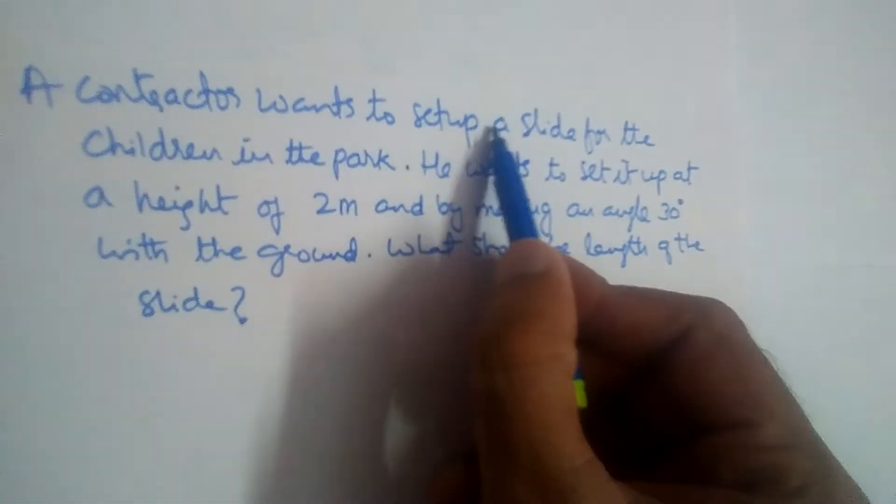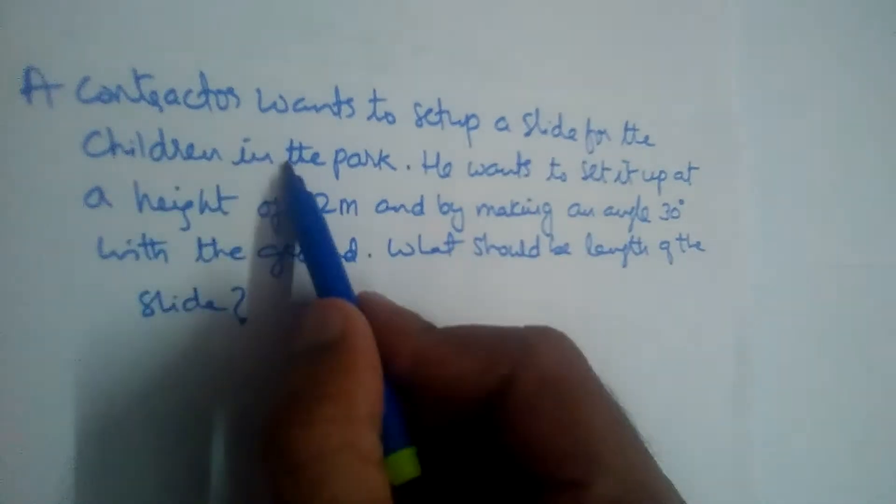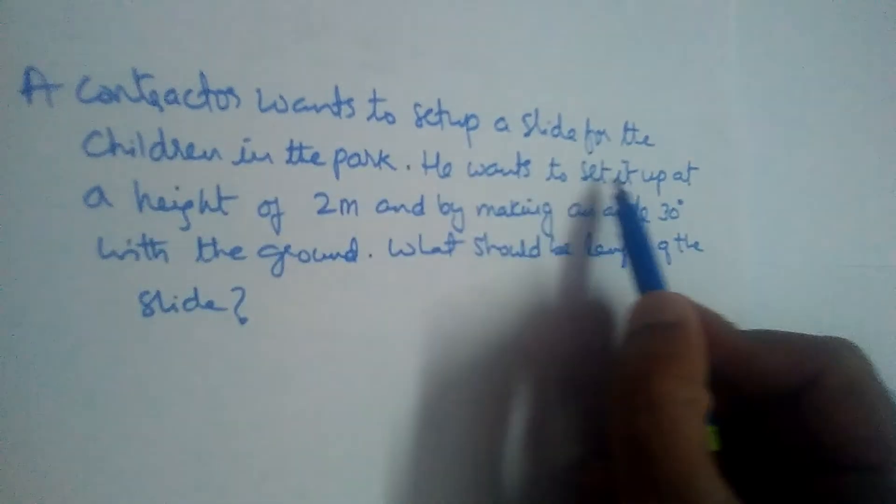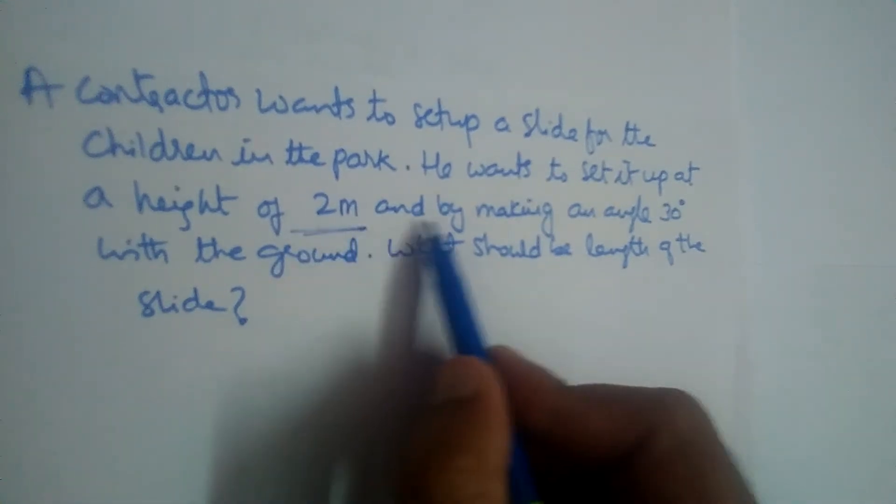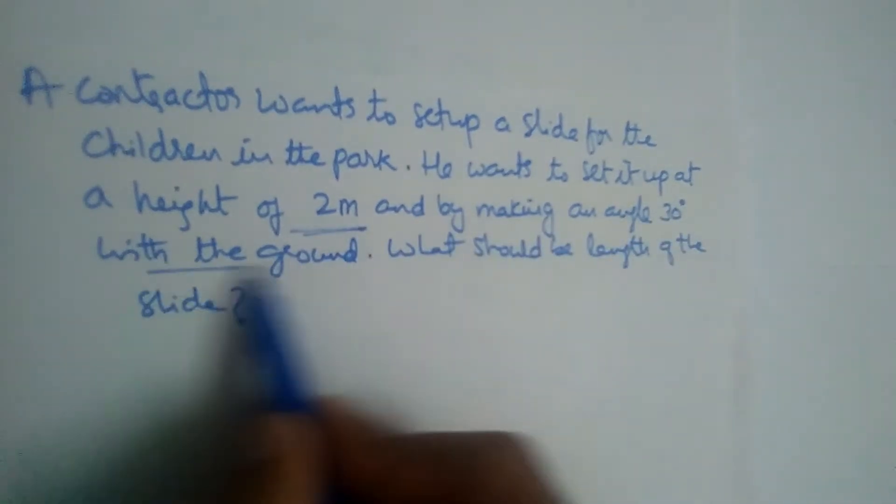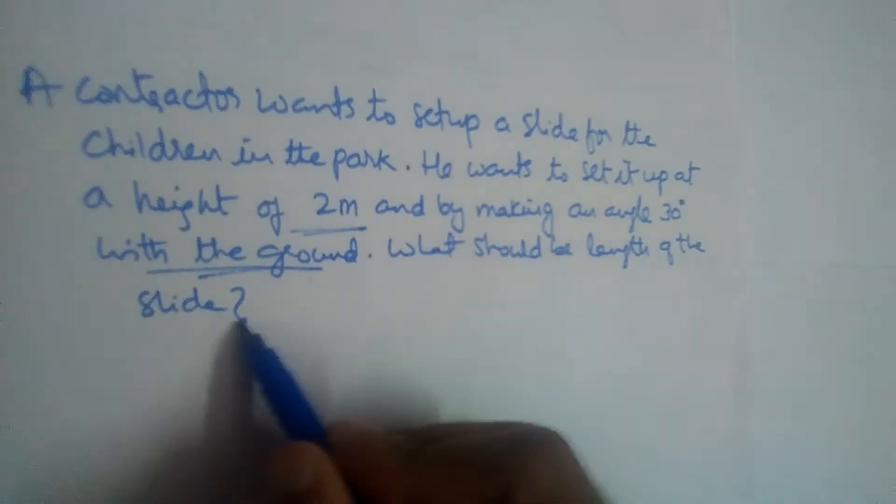A contractor wants to set up a slide for the children in the park. He wants to set it up at a height of 2 meters and by making an angle of 30 degrees with the ground. What should be the length of the slide?